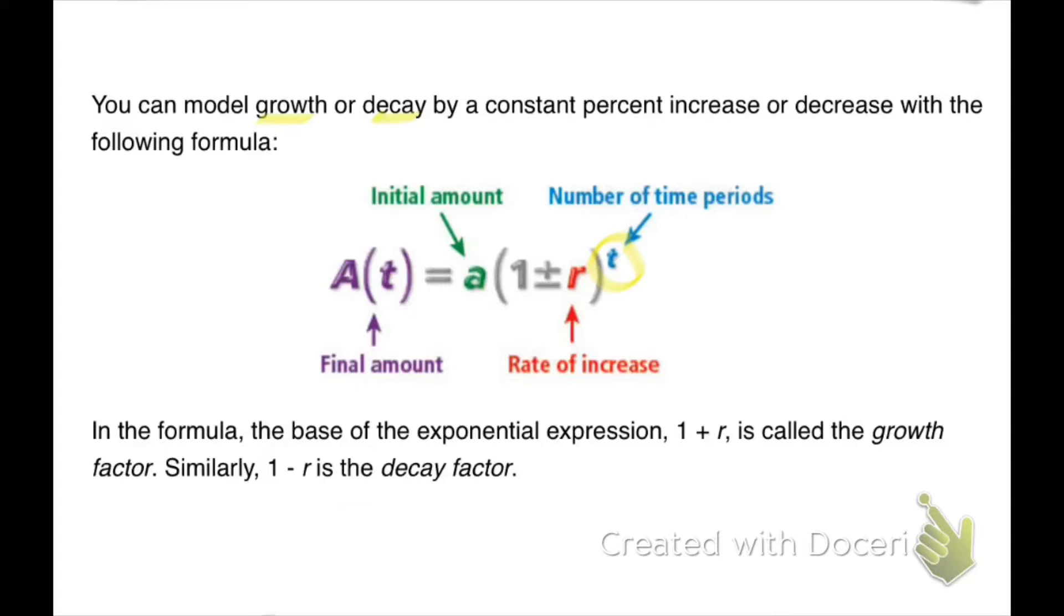Now the plus or minus, we're going to say that we have a growth factor if we are increasing. If we have growth, then we're going to use one plus the rate of increase. Now one minus r, that will give us the decay. So the initial amount if we have decay, our final amount will be less.